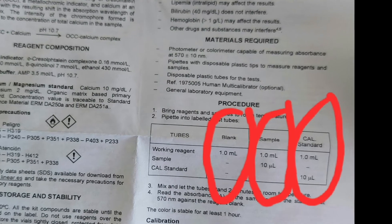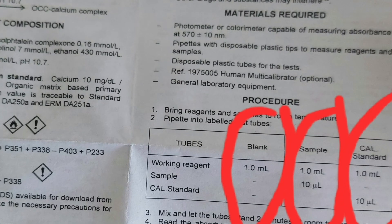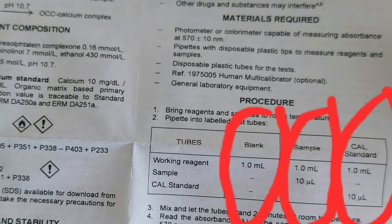This is the protocol we are going to follow. In the blank cuvette, we will take only one ml of working reagent. In the sample test tube, we're going to take one ml of working reagent with 10 microliters of sample. And in the third cuvette, we're going to take one ml of working reagent with 10 microliters of calcium standard.